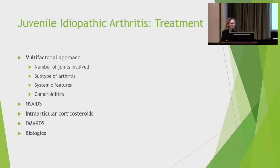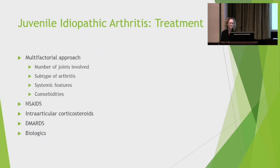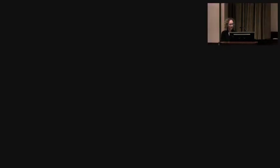Treatment of arthritis in JIA is multifactorial. For oligo or monoarticular disease, joint injections are very frequently recommended. NSAIDs can be recommended depending on the number of joints, subtype, systemic features, and comorbidities. The armaments in the rheumatology toolkit include NSAIDs, steroids, DMARDs, and biologics. Thank you for your attention.